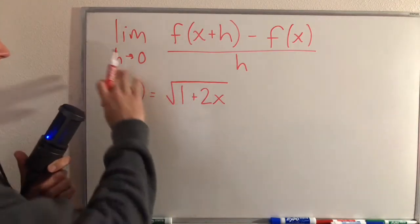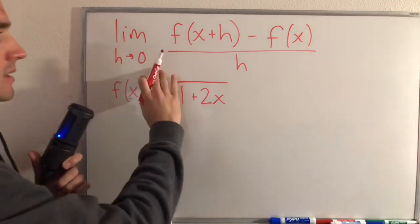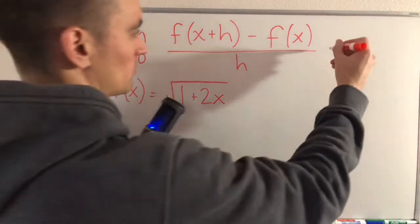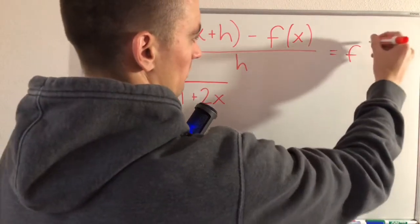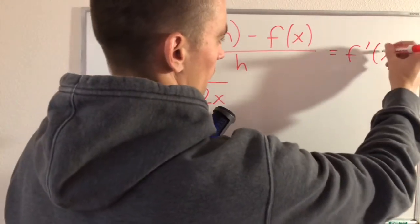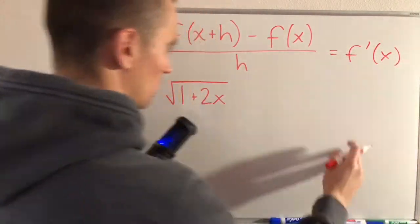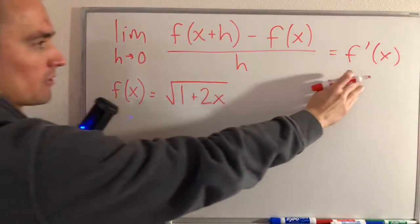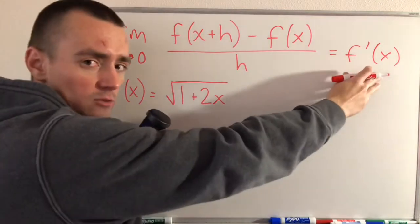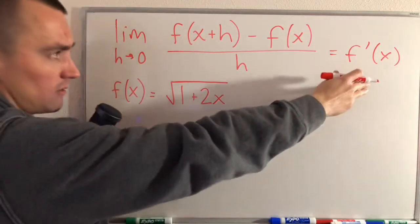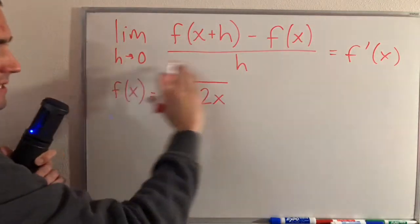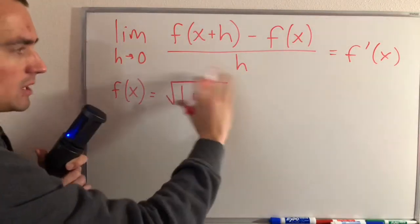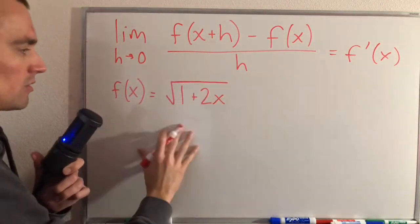This limit here represents the derivative of a function. So if you have some f of x and you're trying to find f prime of x, which is just the derivative, you can use this limit definition to find the derivative.